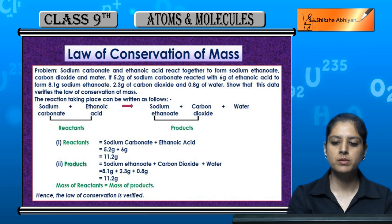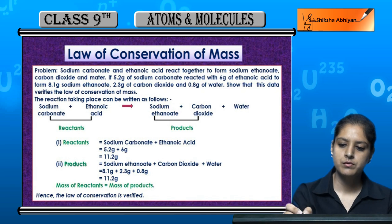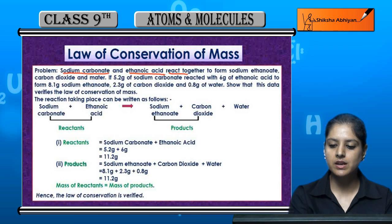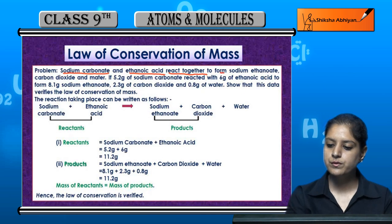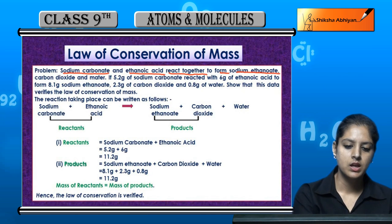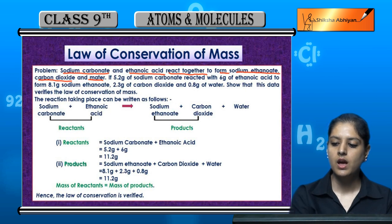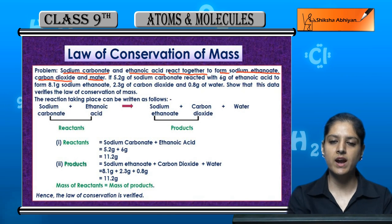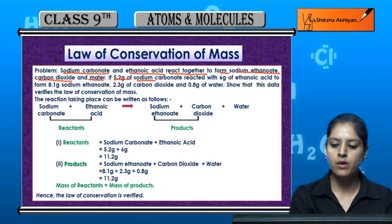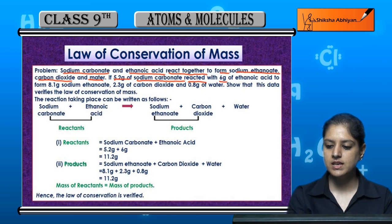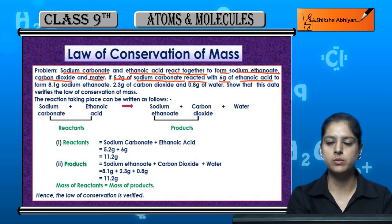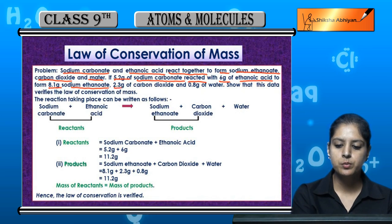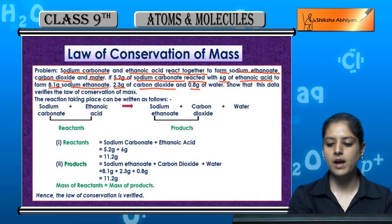Now let's look at a numerical problem. We have sodium carbonate and ethanoic acid as two reactants. If 5.2 grams of sodium carbonate reacted with 6 grams of ethanoic acid to form 8.1 grams of sodium ethanoate, 2.3 grams of carbon dioxide, and 0.8 grams of water as three products.